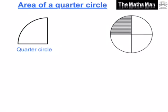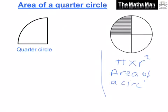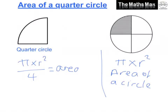Next I'm going to show you how to work out the area of a quarter of a circle. As we can see from this circle, four quarters make one whole circle. We know to find the area of a circle we do pi times r squared. Now we know that four quarters equals one circle, so to find the area of a quarter of a circle we do pi times r squared and then divide our answer by four.